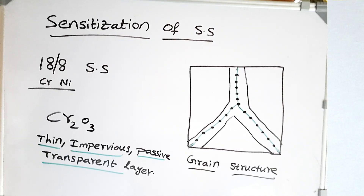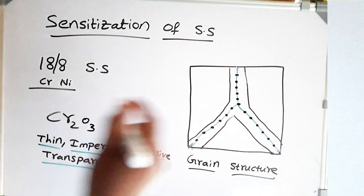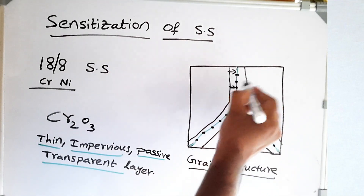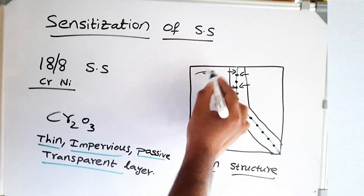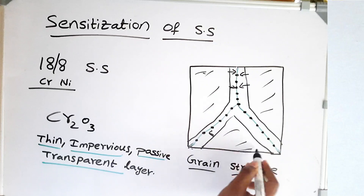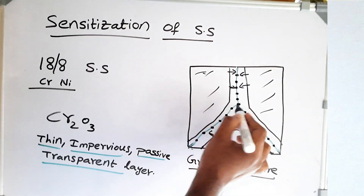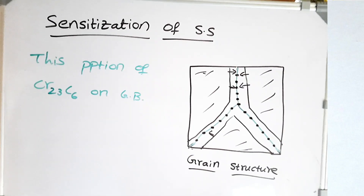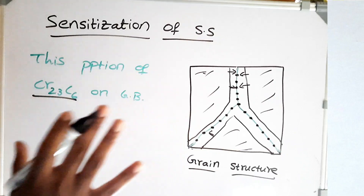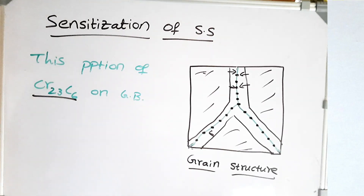Our protective layer is thin, impervious, passive, and transparent. But because of this precipitation on the grain boundary, the chromium depletes from the area just adjacent to the grain boundary. So now all the surrounding area is chromium-rich except for the grain boundary area from which chromium is depleted and precipitated on the grain boundary. This precipitation of chromium carbide on the grain boundary is called sensitization of stainless steel.